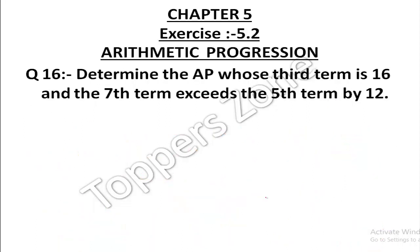Question number 16: Determine the AP whose third term is 16, and the seventh term exceeds the fifth term by 12. Let's look at what is given and set up the equations.